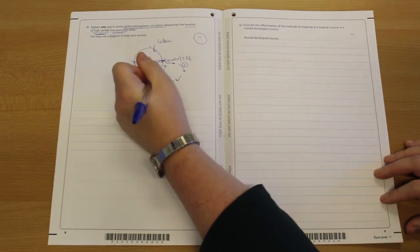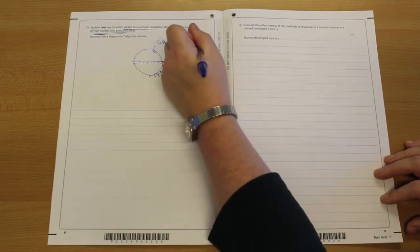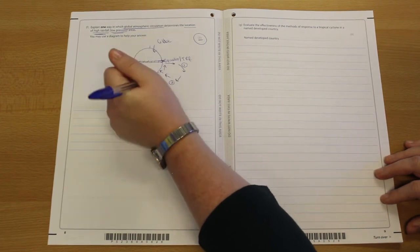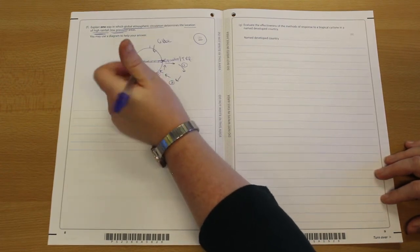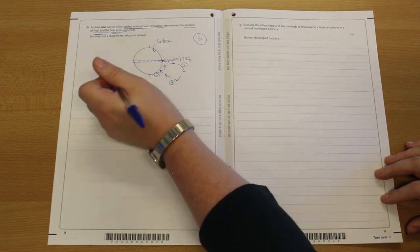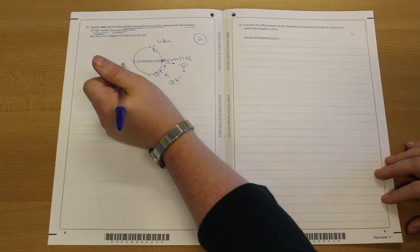If in doubt, start drawing, start trying to do a diagram. You may not get three, but you might actually pick one or two marks up from that question, rather than looking at it and just going, no, can't do it, don't know what it's on about, and ignoring it and hoping it's going to go away.